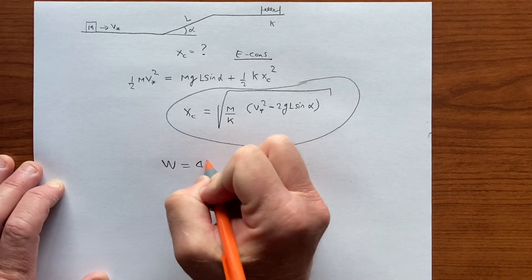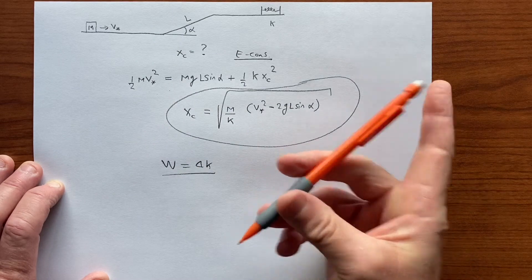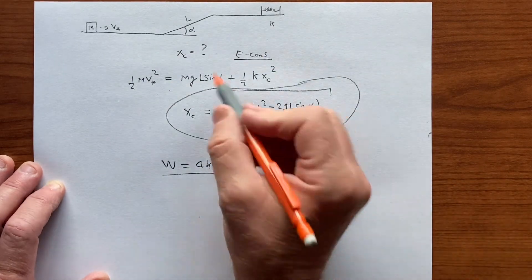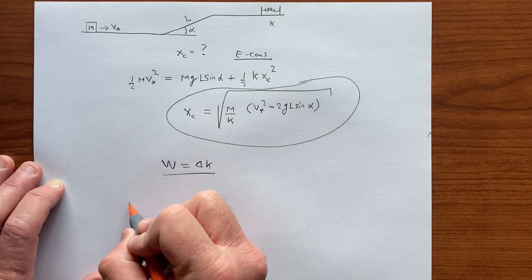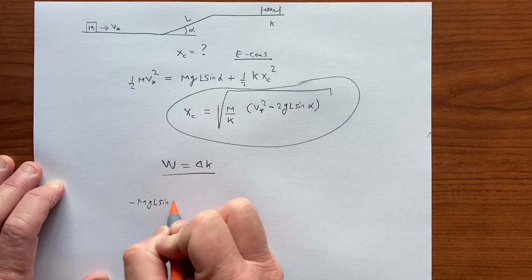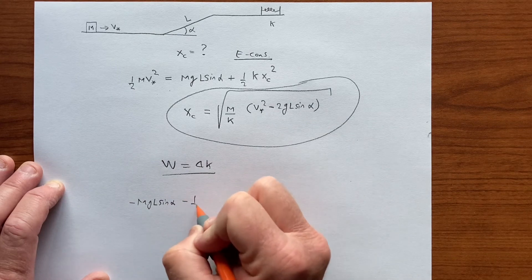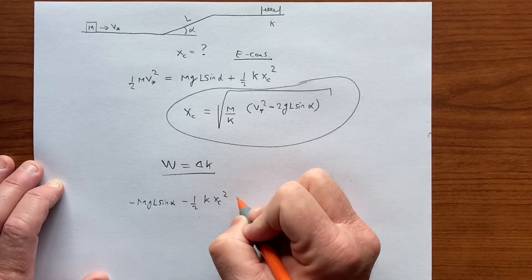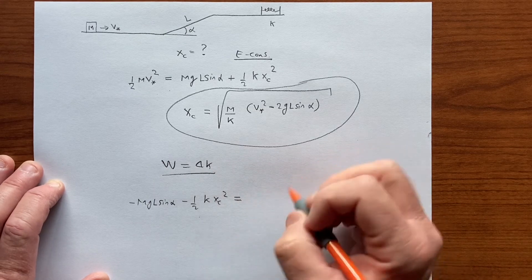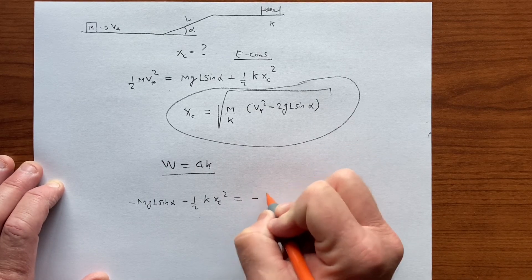And from the perspective of work equals delta k, we're just rearranging these terms. So these are both works and they would appear on the left-hand side. Negative work done by gravity, slowing the object down. Negative work done by the spring, also slowing the object down.